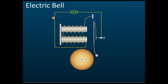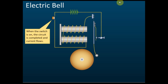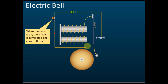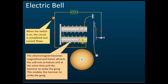Initially there is no current. When you switch on the switch, current starts flowing. The current flows through the circuit, and the electromagnet becomes magnetized — it becomes a magnet. It will then pull the soft iron armature.